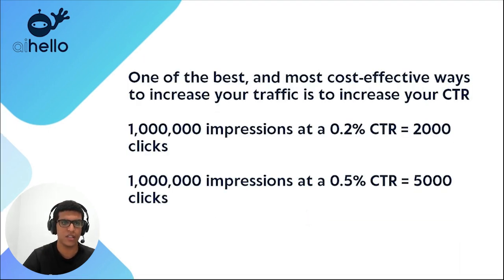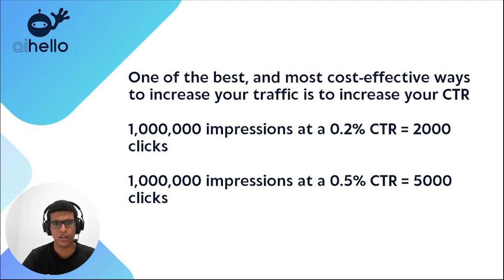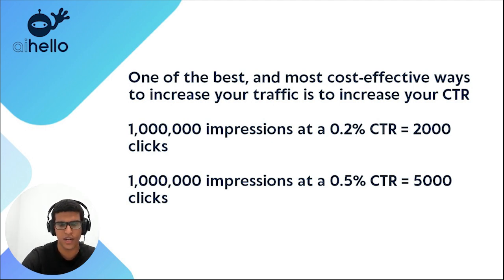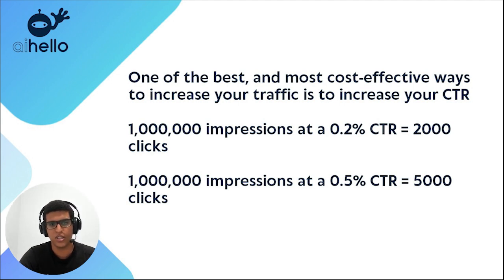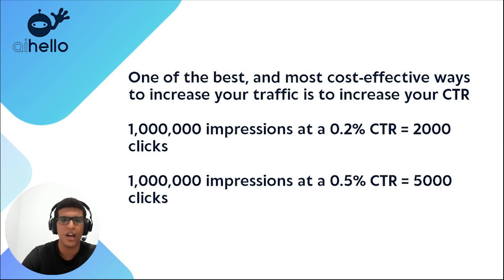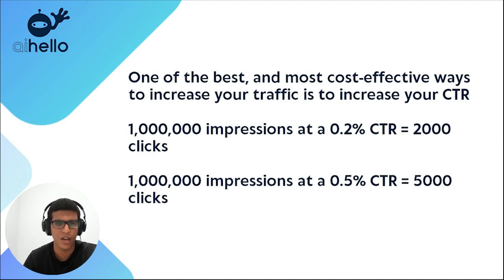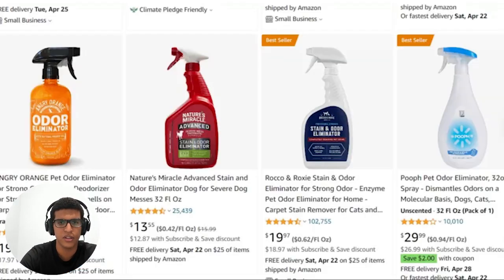Another way to increase sessions is to increase CTR — the percentage of impressions that turn into clicks. Looking at the math: with one million impressions at a 0.2% CTR, you'd get 2,000 clicks; but at a 0.5% CTR with the same impressions, you'd get 5,000 clicks. Obviously doubling your CTR is easier said than done, but let me walk you through what you can do to actually improve it.